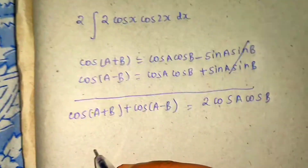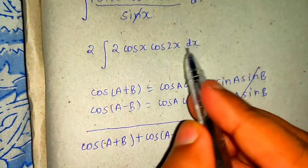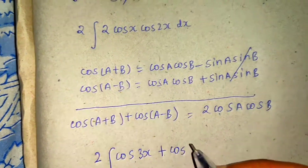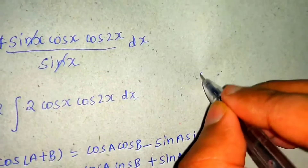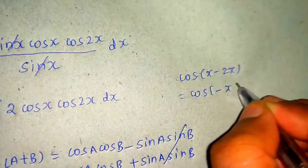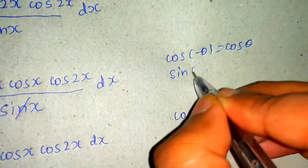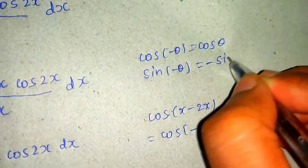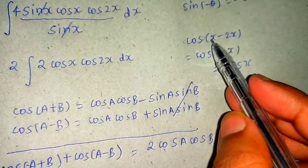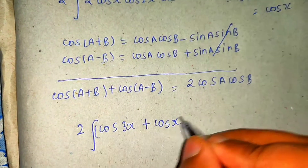Coming back to the integral, using the formula with A = x and B = 2x: cos(A+B) = cos(3x) and cos(A−B) = cos(x−2x) = cos(−x). Now, cos(−θ) = cosθ, so cos(−x) is simply cos(x). The integral becomes (1/2)·∫[cos(3x) + cos(x)] dx.